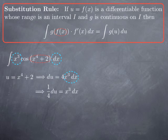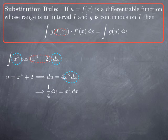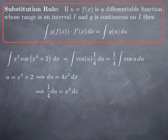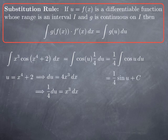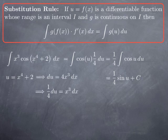Now we replace x cubed dx with 1/4 du and cosine of x to the fourth plus 2 with cosine of u. We obtain the integral of cosine of u times 1/4 du, and pulling the constant 1/4 out gives 1/4 times the integral of cosine u du. An antiderivative of cosine is sine, so we get 1/4 sine of u up to a constant. Substituting back u equals x to the fourth plus 2, the final answer is 1/4 sine of x to the fourth plus 2, plus a constant.